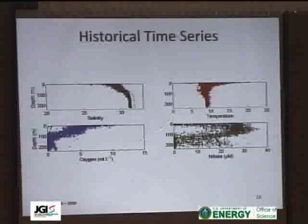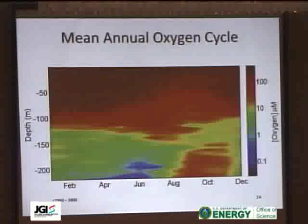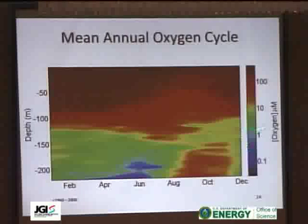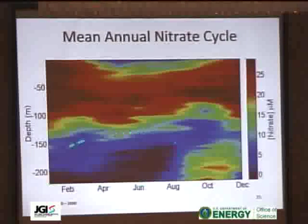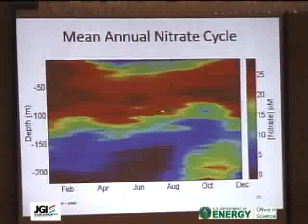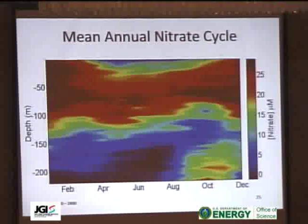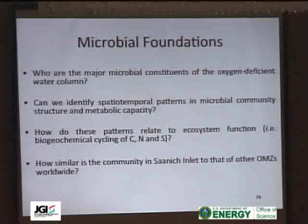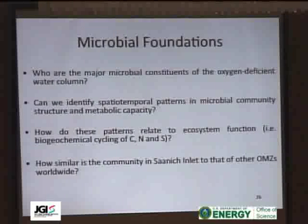We can take oxygen over that time interval and plot it as a contour. The mean oxygen concentration over a 40-year span from 1960 to 2000 — red is high oxygen, blue is low — represents the cycle of seasonal stratification and deep water renewal. From April into August, deep waters become anaerobic, and in the fall there's an influx of oxygenated water from the Haro Strait. Nitrate is similarly depleted during peak stratification, then replenished in the deep water during fall renewal.